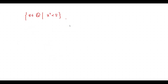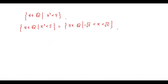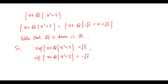Consider this set. This set equals this one. Note that Q is dense in R. So, the supremum of this set equals √5. The infimum of this set equals minus √5.